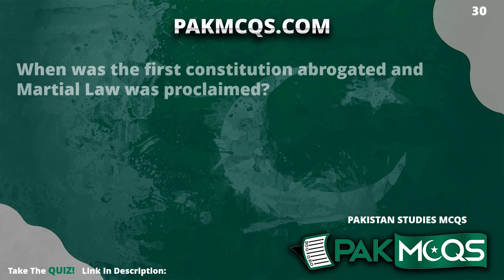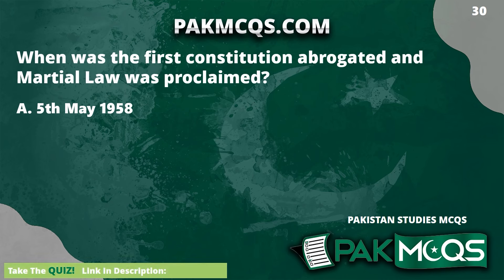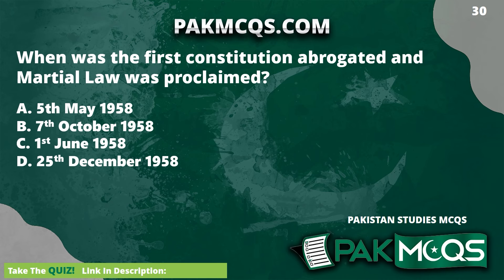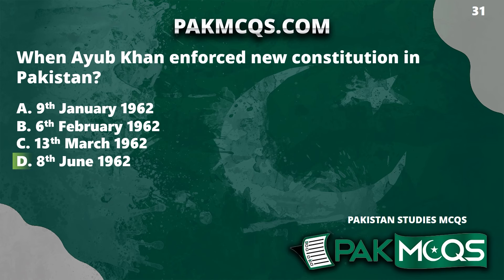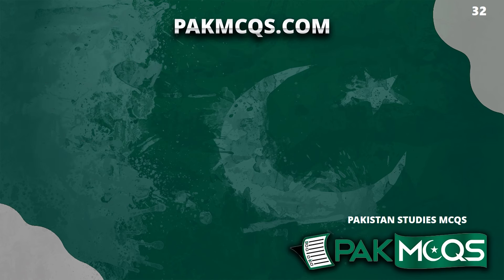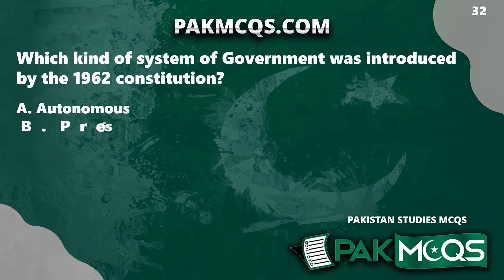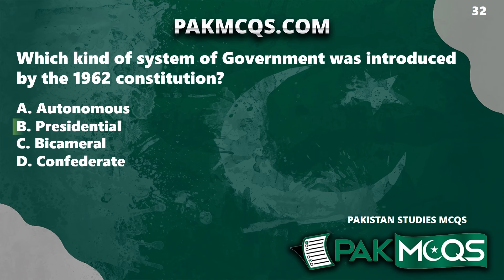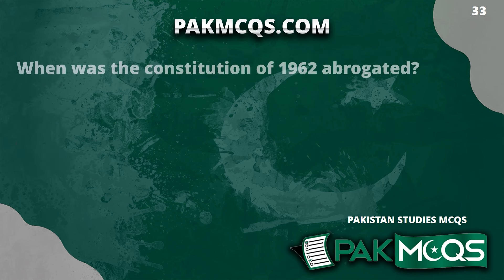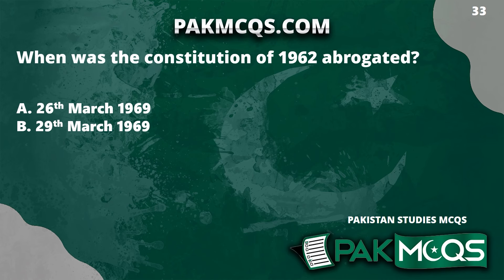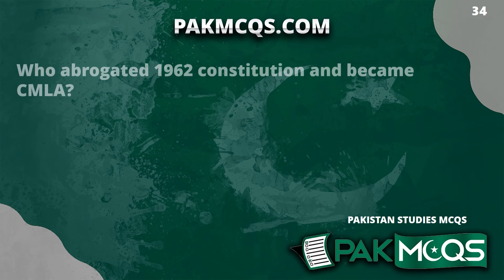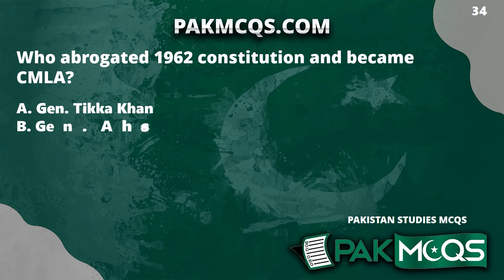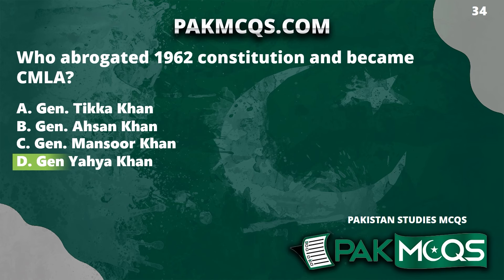When was the first constitution abrogated and martial law proclaimed? 7th October 1958. When did Ayub Khan enforce a new constitution in Pakistan? 8th June 1962. Which kind of system of government was introduced by the 1962 constitution? Presidential. When was the constitution of 1962 abrogated? 25th March 1969. Who abrogated the 1962 constitution and became CMLA? General Yahya Khan.